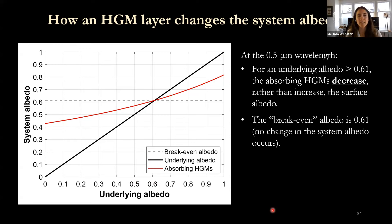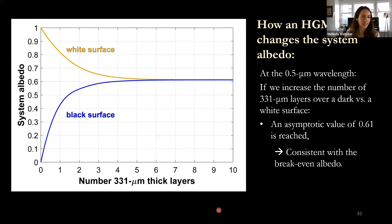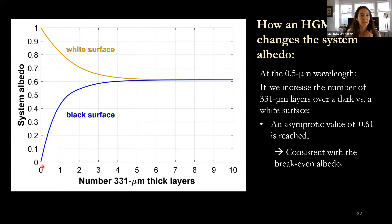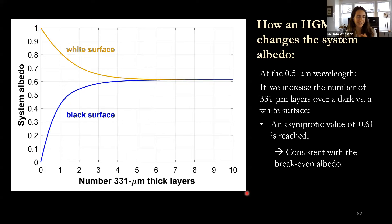We then asked: what happens if you add multiple thick layers of HGMs? We calculated the system albedo as a function of the number of layers applied. Starting from a completely dark surface, no matter how many layers you apply, you eventually plateau at a system albedo of 0.61. Starting from a completely reflective surface, you decrease the albedo with each layer, but also plateau at 0.61. So you can't really boost the albedo beyond 0.61 by adding more HGMs — it just flattens out.